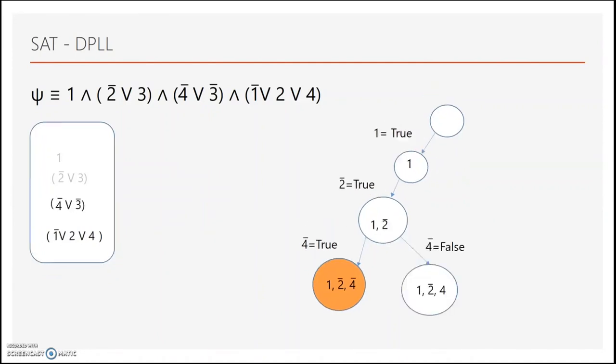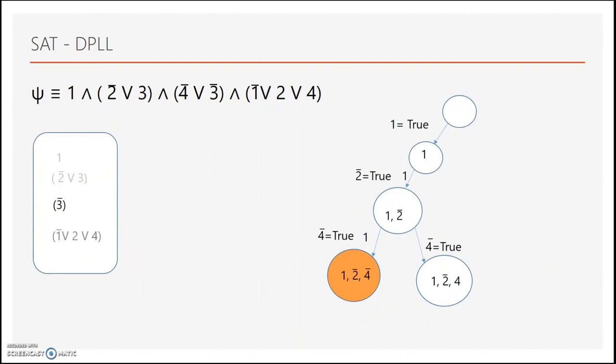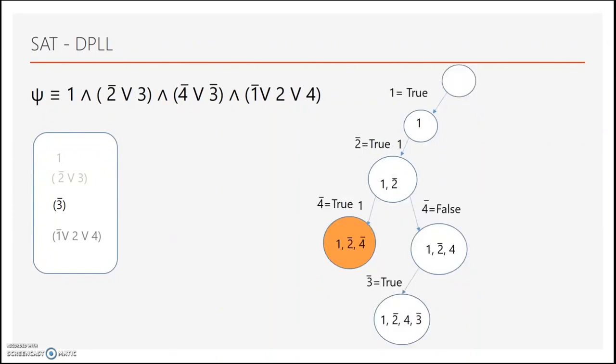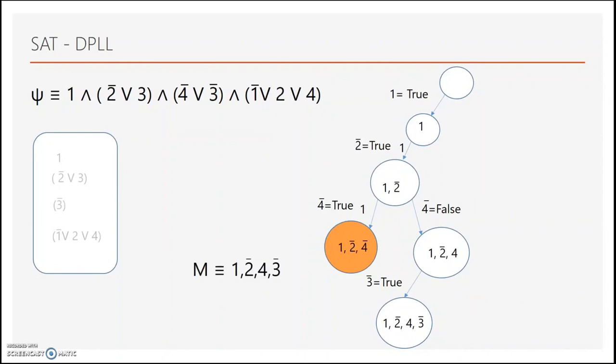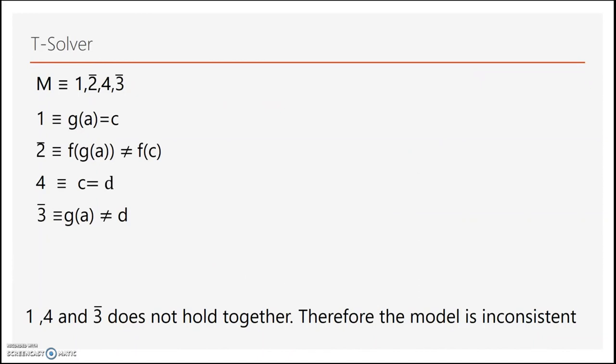And then we set 4 bar to false. Setting 4 bar to false removes one of the clauses and removes one of the literals from other clauses. This leads to unit clause of 3 bar and hence we do unit propagation again on 3 bar, setting 3 bar to true. Setting 3 bar to true makes our last clause true. And we have a new model. We again send this model to T solver and check if it's consistent. We see that 1, 4 and 3 bar does not hold true together therefore the model is not consistent.